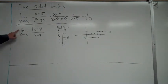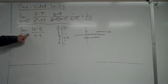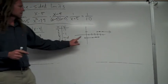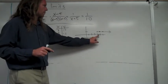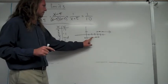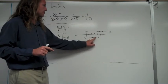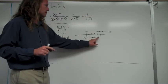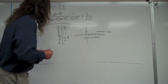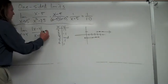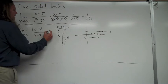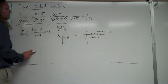Using this graph to find the limit as x approaches 4 from the left: I go to 4, find the function on the left-hand side, approach it, and the y-value looks like it's approaching negative 1. So this limit is just negative 1.